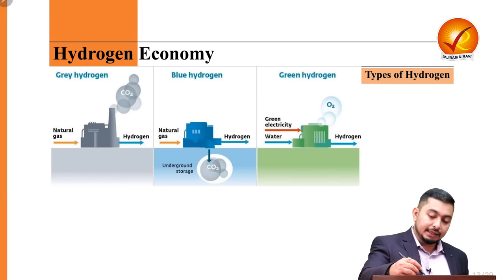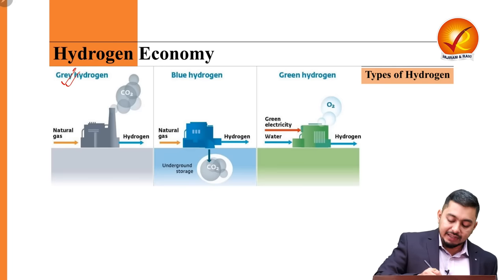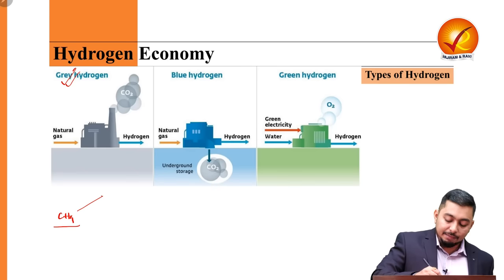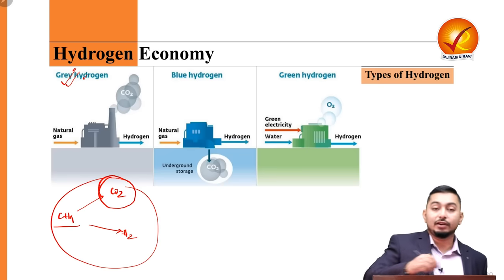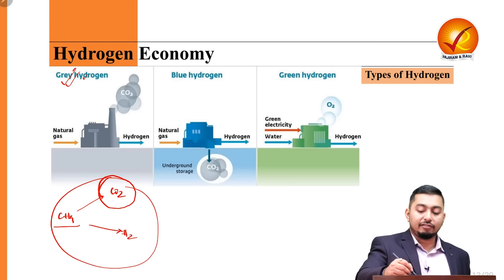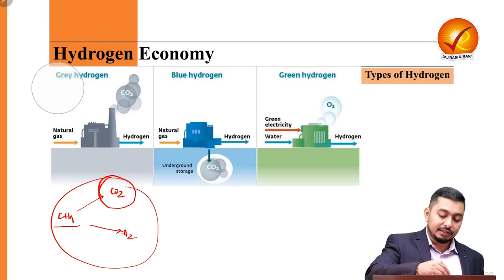Let's look at the types of hydrogen. We have grey hydrogen, where we take a carbon-intensive source — natural gas, CH4 — and break it into CO2 and hydrogen molecules. Since CO2 is added, it is called grey hydrogen. We can also have black hydrogen, which is more carbon-intensive. Then there is blue hydrogen, where the same process is repeated except the carbon goes for carbon sequestration — stored in underground caverns.